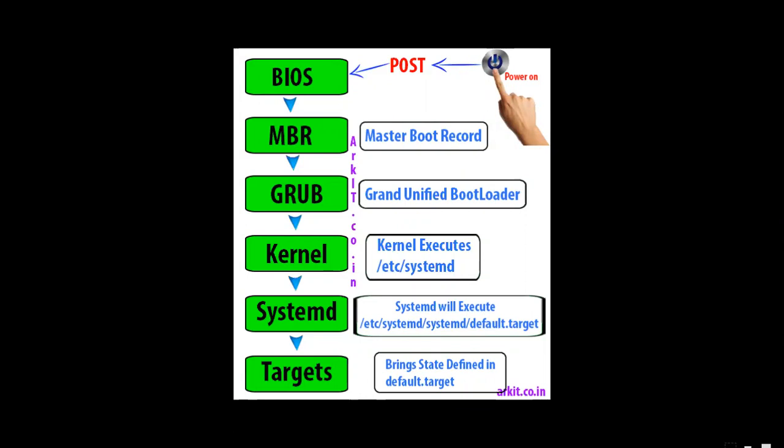We can see the run level. We can see what run levels are like: multi-user, single-user, with-network, without-network, with-graphic, etc. We can execute the run level as well as the start-ups, scripts, and services. We can execute systemd and then execute the run level as well as the target. We can execute the user's commands.